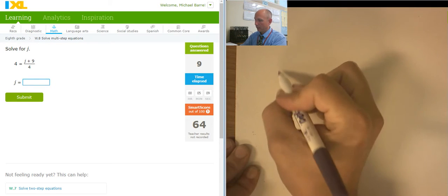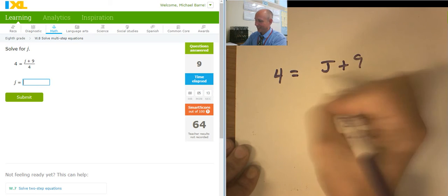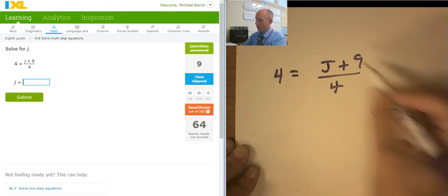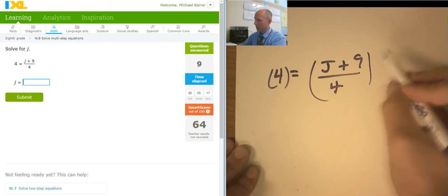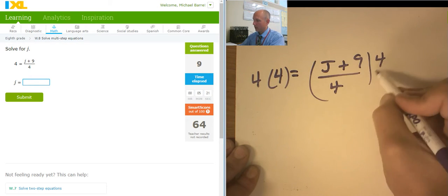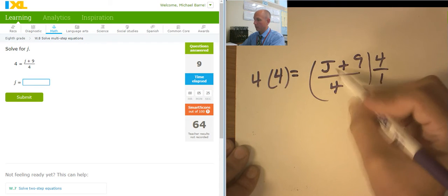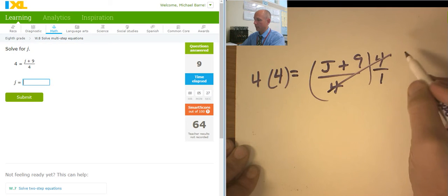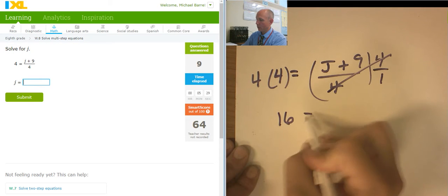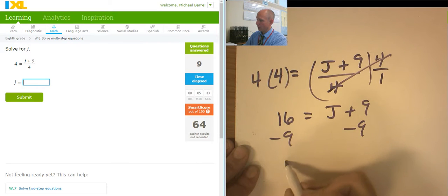Same type of problem. Actually, not the same type of problem. But it starts its life as a fraction. Put both sides in parentheses. 8 with the 4. Right? Because this is actually 4 over 1 times this guy with the 4 in the denominator. These guys cancel out. I'm left with 16 equals j plus 9. Subtracting 9 from both sides. j equals 7.